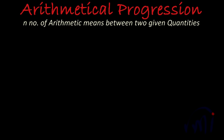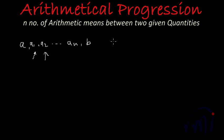In this video we are going to learn how to insert n number of arithmetic means between any two given quantities. So suppose if we have two quantities like a and b, and we want to insert n number of terms between these two quantities — a1 is the first term, then a2 till an. These newly inserted quantities will be called arithmetic means between a and b if the series formed by writing these numbers between a and b is in arithmetic progression.